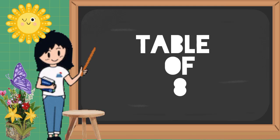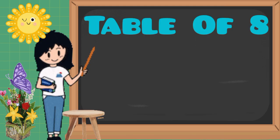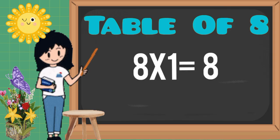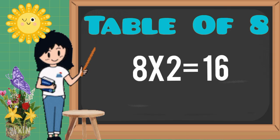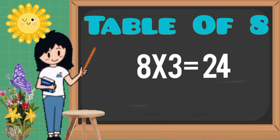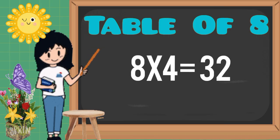Let's learn table of eight. Eight ones are eight, eight twos are sixteen, eight threes are twenty-four, eight fours are thirty-two.